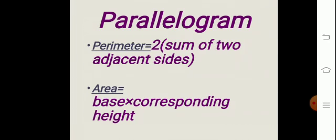Parallelogram. A parallelogram is a type of quadrilateral where opposite sides are equal and parallel. The perimeter of a parallelogram is equal to 2 into the sum of 2 adjacent sides. Adjacent sides are continuous sides that share a common vertex. The area of a parallelogram is equal to base into corresponding height.